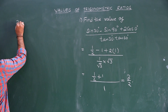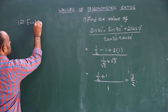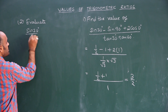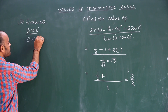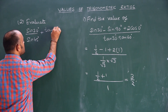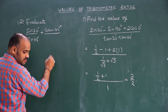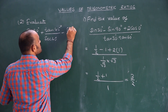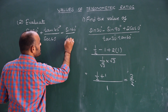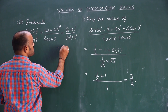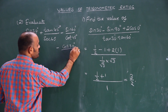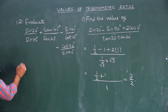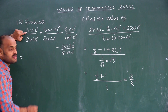Let's see one more question. Evaluate: sin 30 degrees divided by sin 40 degrees, plus tan 40 degrees divided by sec 60 degrees, minus sin 60 degrees divided by cos 30 degrees, all divided by sin 90 degrees. Sin 30 degrees is 1 by 2.